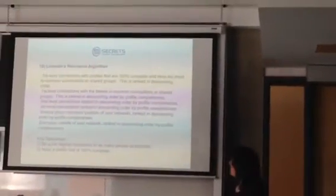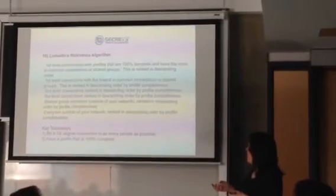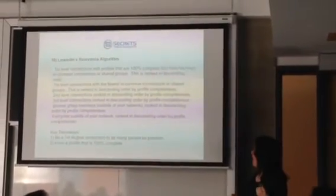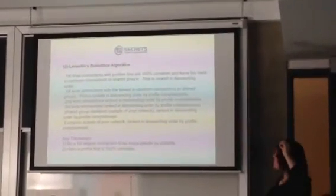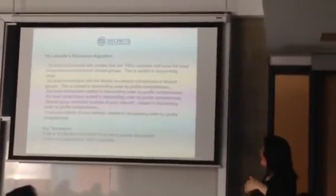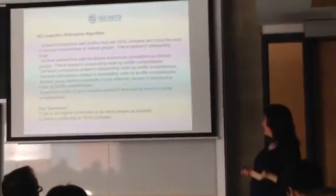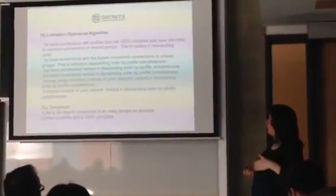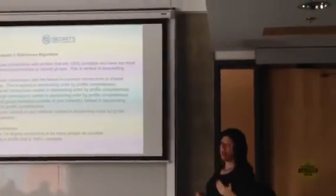The algorithm will show your first-level connections with profiles that are 100% complete and have the most common connections or shared groups — you're going to be in the top results for that person. Then it's ranked in descending order. If you're doing a search, you'll see first-level connections with the fewest common connections or shared groups, again in descending order, ranked by profile completeness.